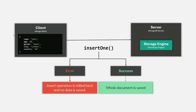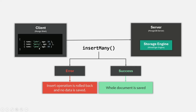Let's understand this with another example. Instead of insertOne, I'm now using the insertMany method, passing a list of documents to insert into a MongoDB collection. During the insert operation, let's say the first document was successfully inserted, and the second document is being inserted when suddenly something went wrong, so the second document is only partially inserted.